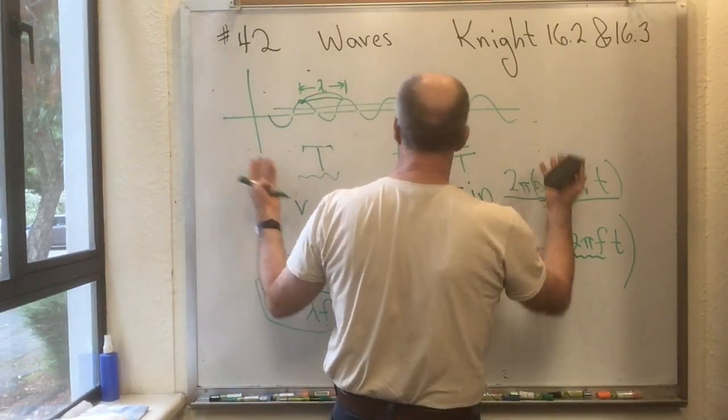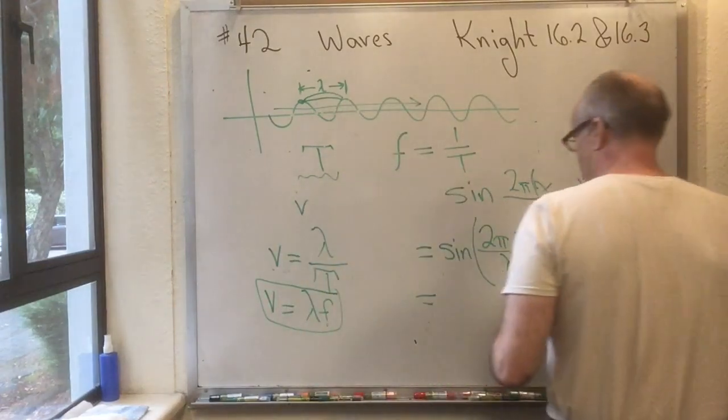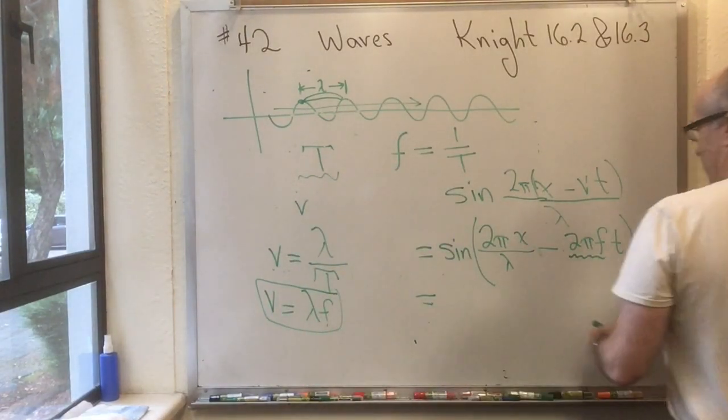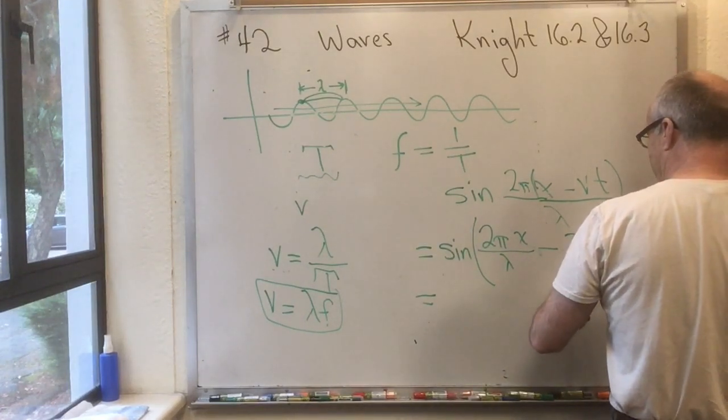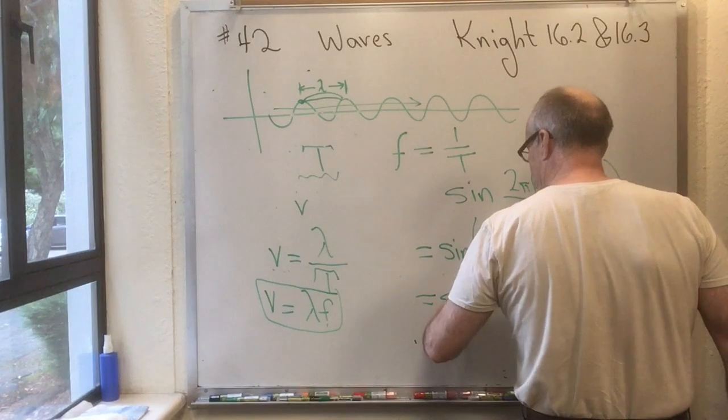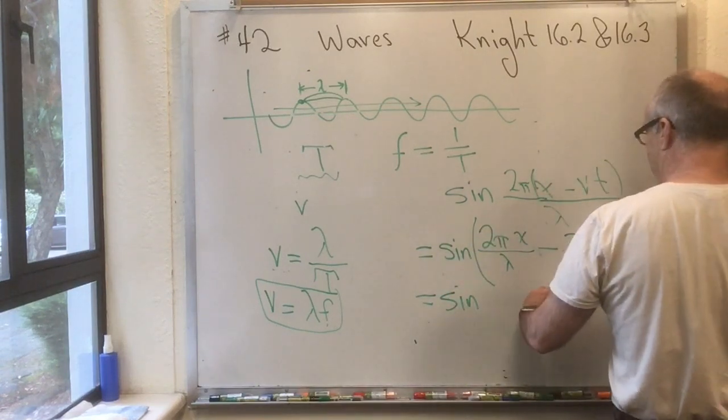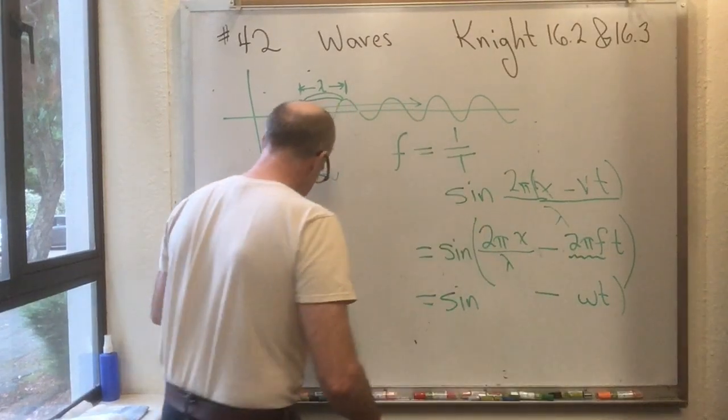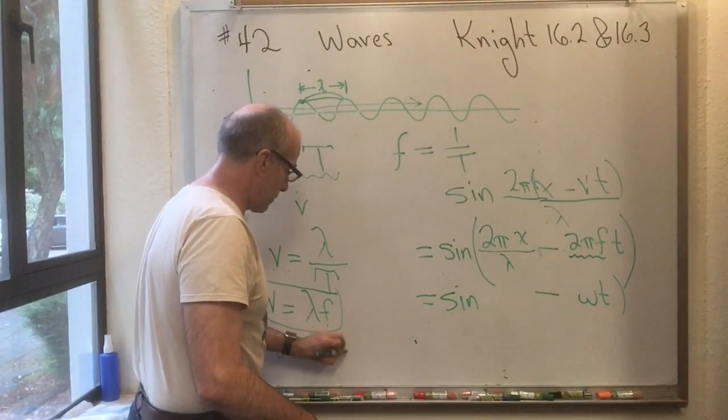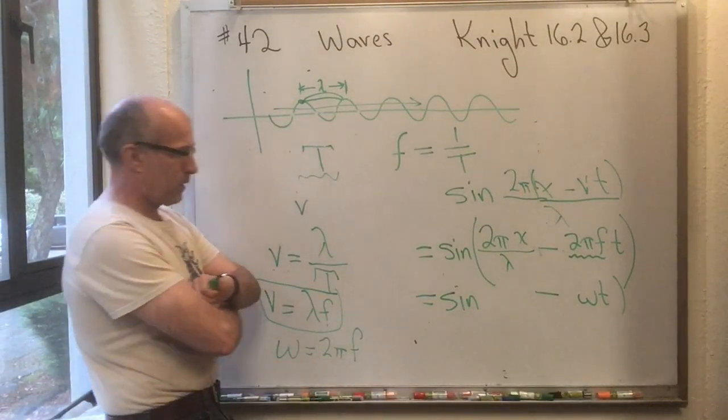And even though there's no angles in this problem, there's nothing going around in circles, this is still worth calling omega T and kind of thinking of as an angular velocity. So this term here is now minus omega T, where, as usual, omega equals 2 pi F.